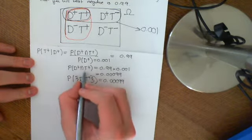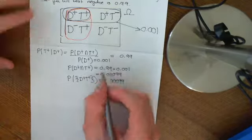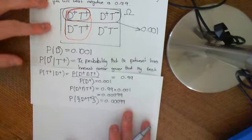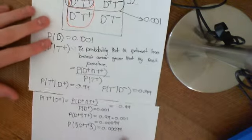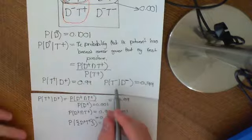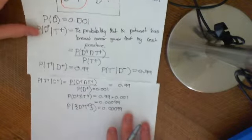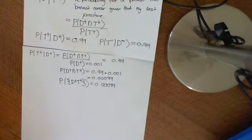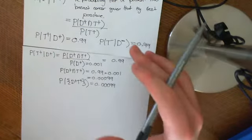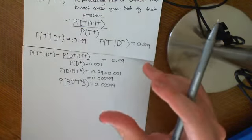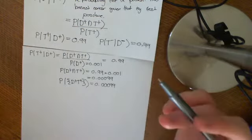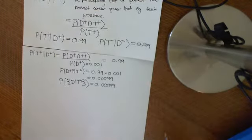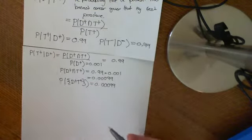So we can say the probability of D plus intersection T plus is equal to that, and we've got this term. Now, I was going to show you this solution using the law of total probability, but I'd like the argument to be followable to anyone who doesn't know the law of total probability. So I'm going to firstly do it without the law of total probability, and then show you how you could use it.